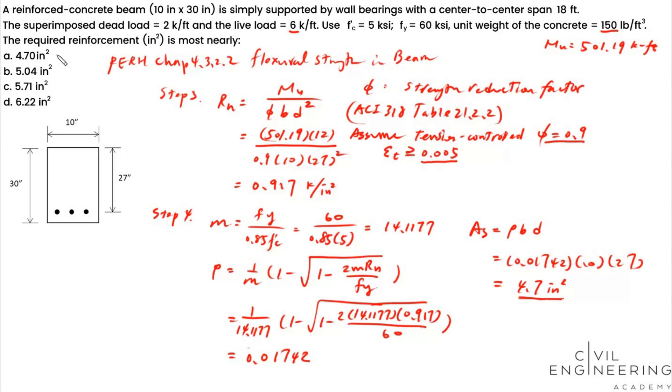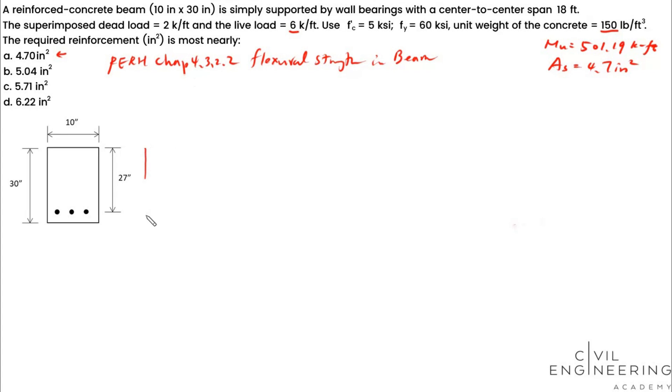So we are pretty certain that the answer should be A. But like we just mentioned, since we assume that the strength reduction factor is 0.9 under the tension controlled criteria, we need to double check whether the strain in the steel is larger than 0.005. So in the same chapter, there's a graph showing like this. This is your compression at the concrete block, this is a, and this is your tension at the reinforcement. This is your compression at the concrete, and this is your strain diagram. This is the strain at the steel. This is d, and this is c.